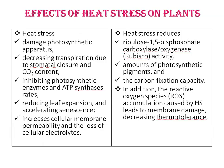Heat stress damages the photosynthetic apparatus, decreasing transpiration due to stomatal closure and carbon dioxide content, inhibiting photosynthetic enzymes and ATP synthesis rates, reducing leaf expansion and accelerating senescence, and increases cellular membrane permeability and the loss of cellular electrolytes. Heat stress also reduces Rubisco (ribulose 1,5-bisphosphate carboxylase oxygenase) activity, amounts of photosynthetic pigments and the carbon fixation capacity.